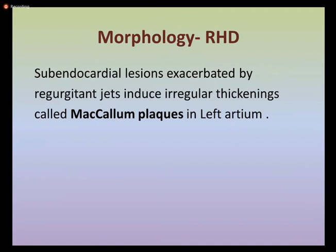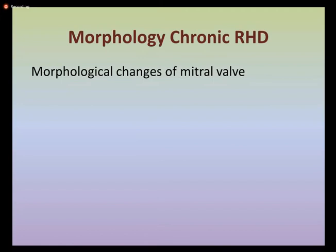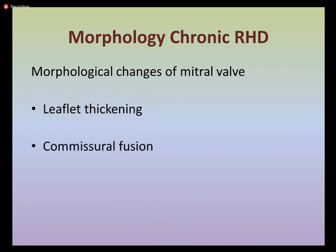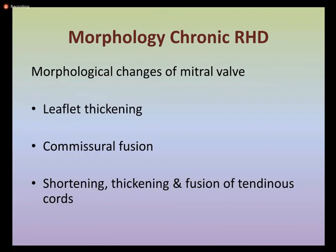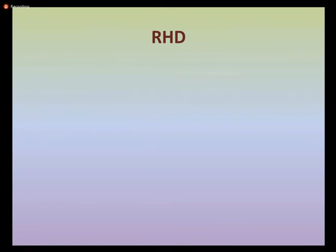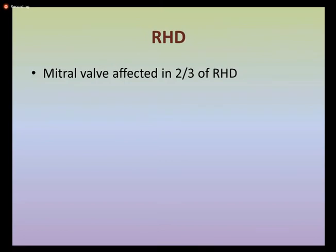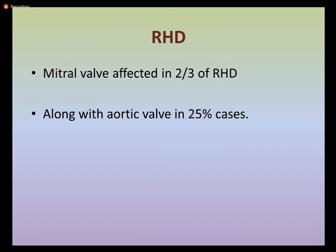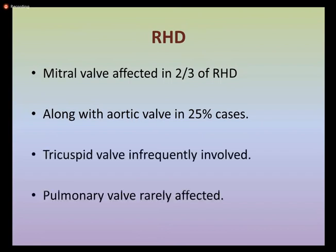Other morphological changes include sub-endocardial lesions exacerbated by regurgitant jets, inducing irregular thickening called MacCallum plaques in the left atrium. These plaques are abnormal thickenings of the endocardial or sub-endocardial surface common in conditions with regurgitant valvular lesions. In chronic rheumatic heart disease, major morphological changes are seen in the mitral valve: leaflet thickening, commissural fusion, and shortening, thickening, and fusion of the tendinous cords. The mitral valve is affected in two-thirds of cases along with the aortic valve in 25 percent; the tricuspid is infrequently involved and the pulmonary valve is rarely affected.